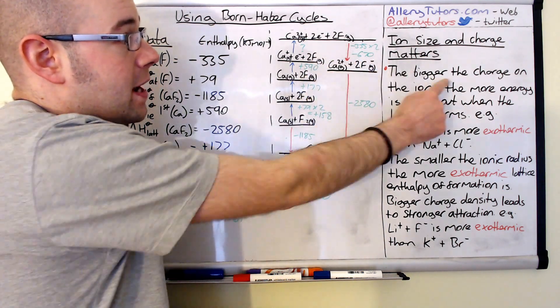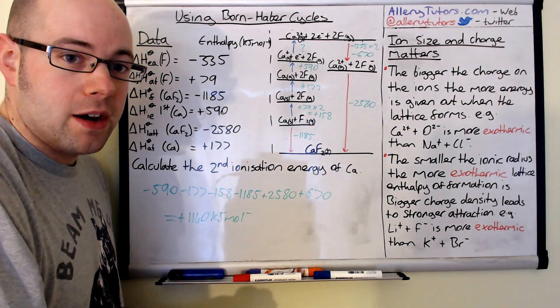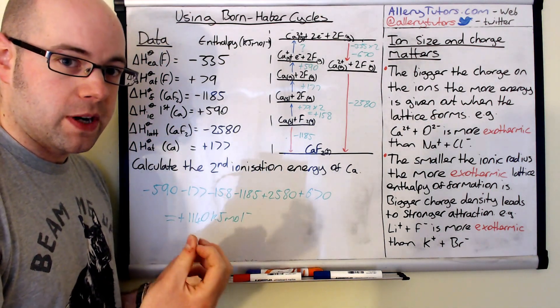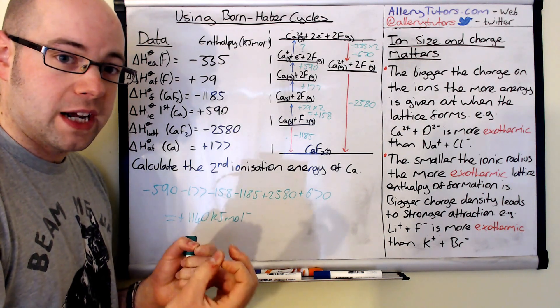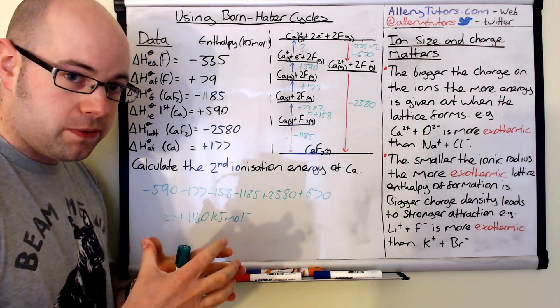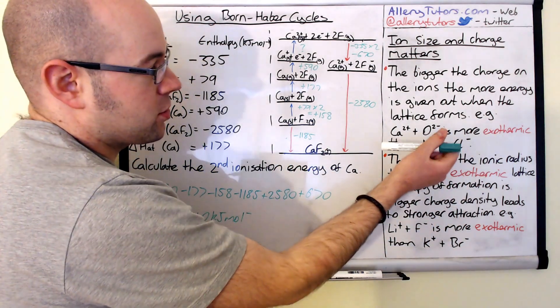So the bigger the charge on the ions we get a more exothermic reaction. And this is because we have a stronger attraction between two ions which are effectively more positively charged or negatively charged and they're attracted to each other much more strongly. So when they do form to form the final lattice structure then we get a very exothermic reaction.